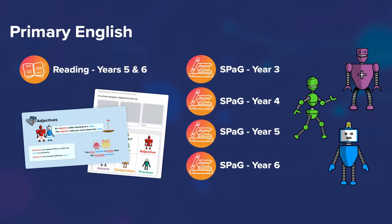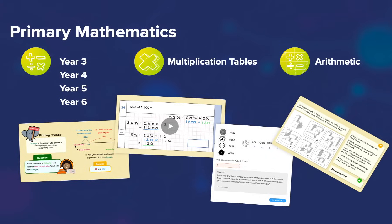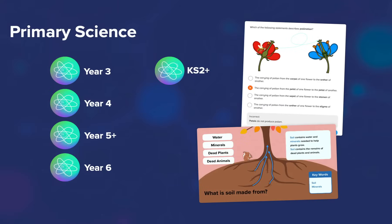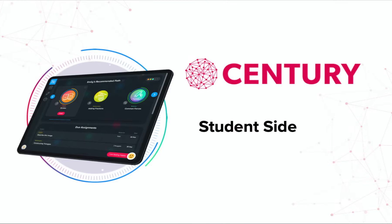We have content for English, Maths and Science from Year 3 to Year 6, mapped to the national curriculum. Our maths courses are also aligned to White Rose Maths. All of our courses are designed to provide ample challenge and support for learners of all abilities.